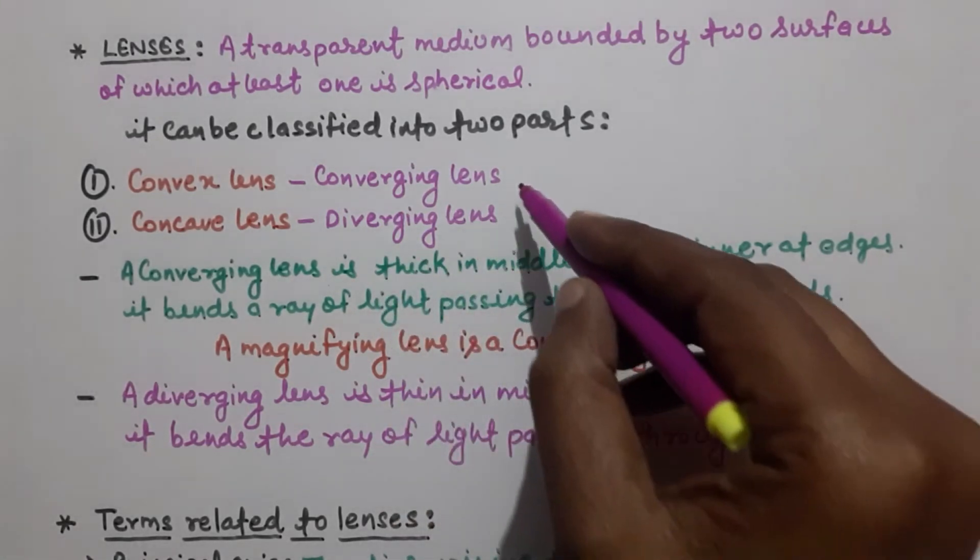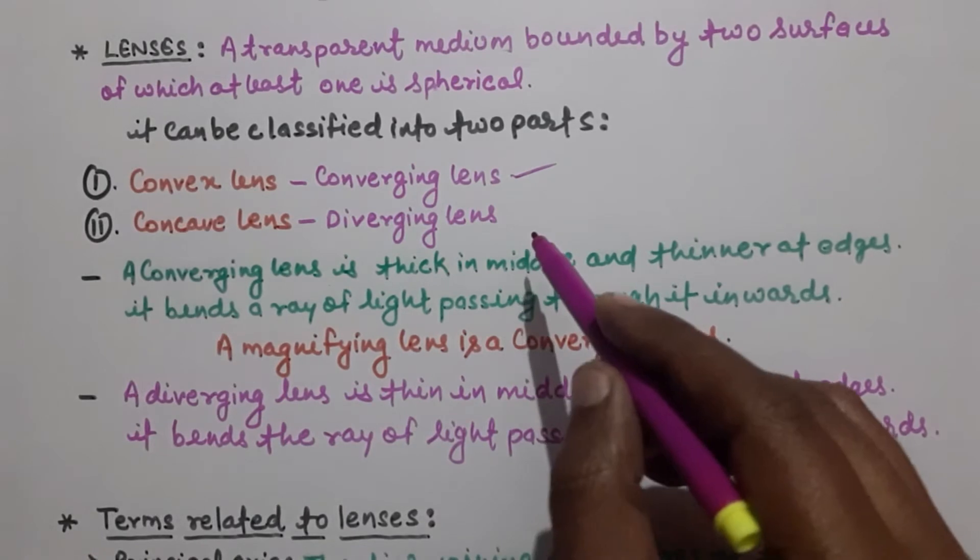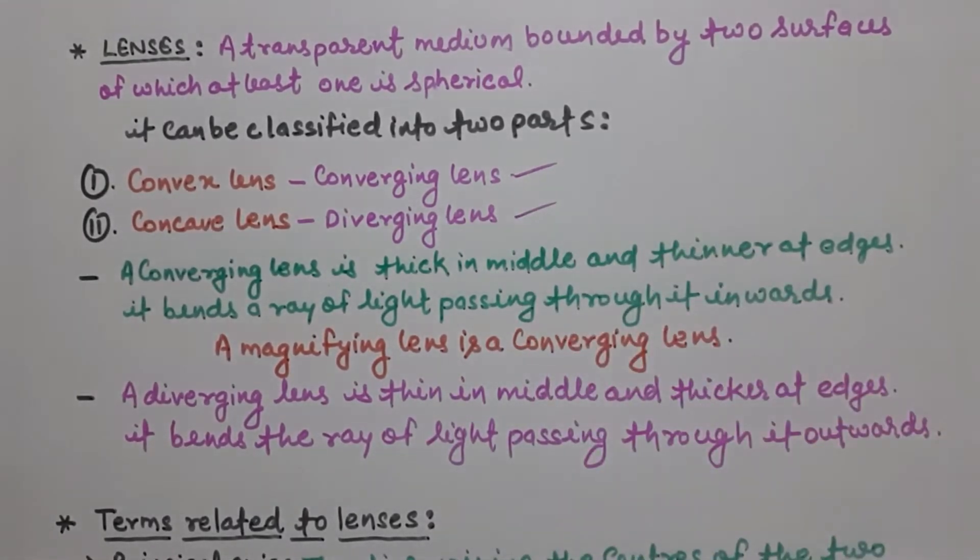Convex lens is also known as converging lens. Concave lens is also termed as diverging lens. Clear? Converging and diverging. Let's see here.